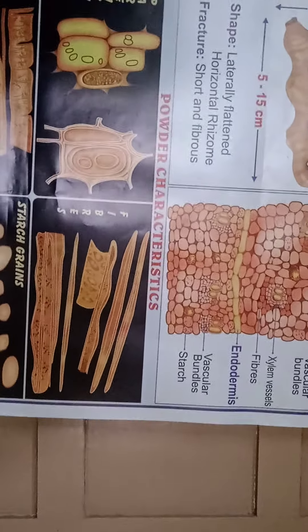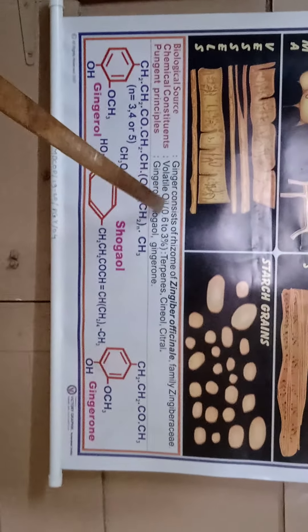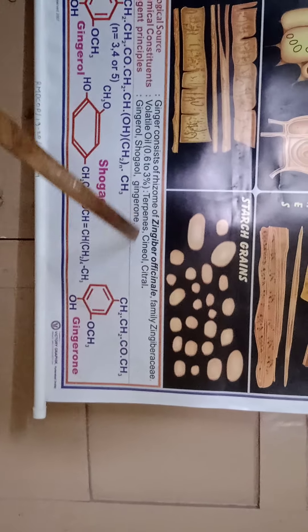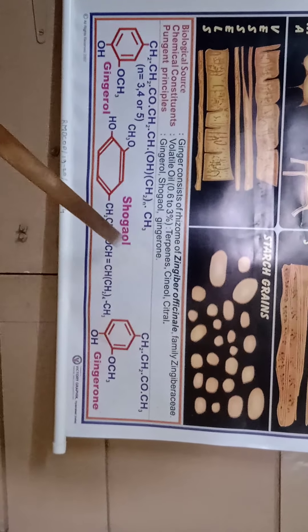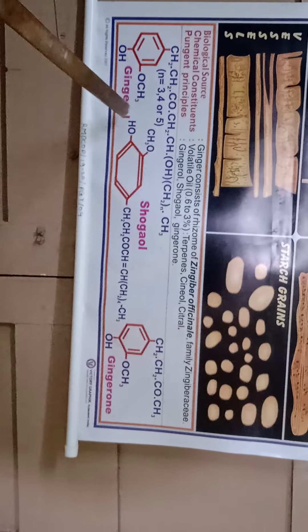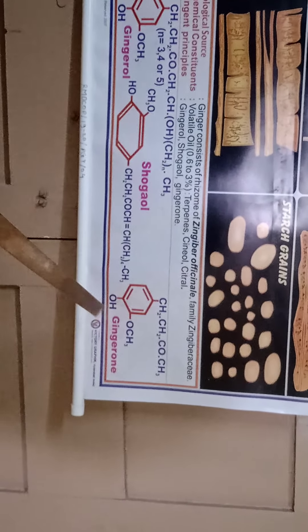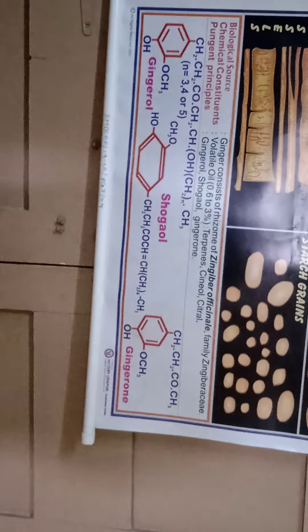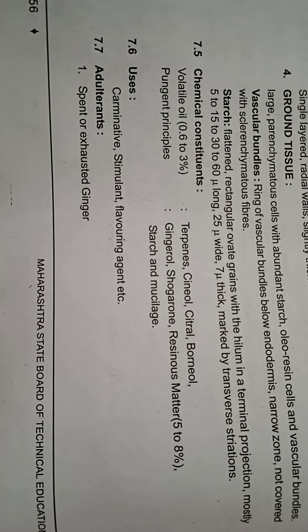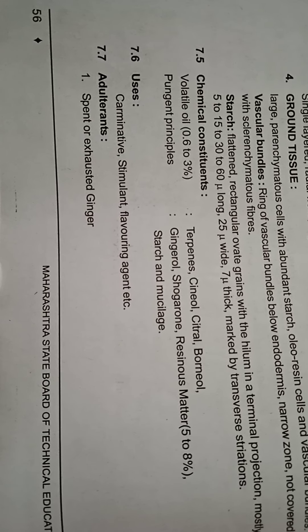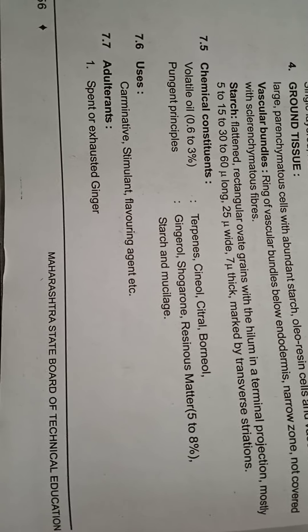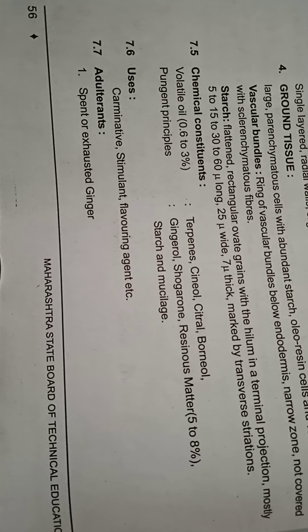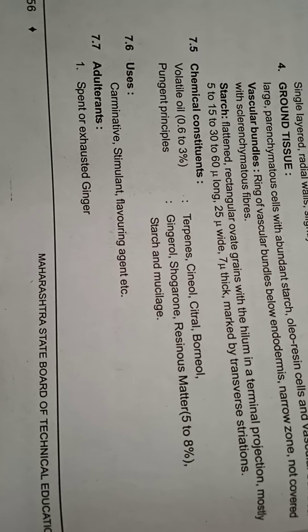The chemical constituents of this drug are: volatile oil 0.6 to 3 percent, terpenes, cineol, citral, and borneol; pungent principles — gingerol, shogaol, and zingerone; resinous matter, starch, and mucilage. This drug is used as a carminative, stimulant, and flavoring agent.